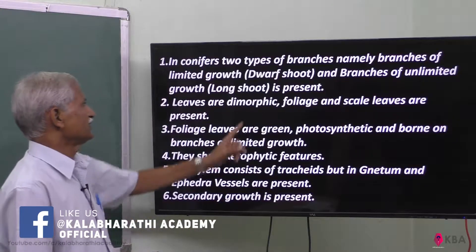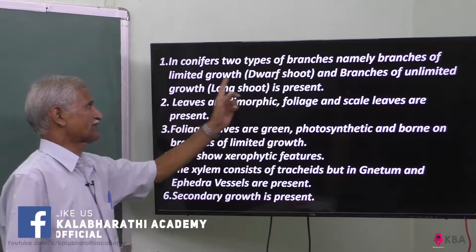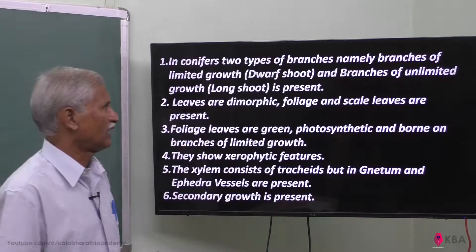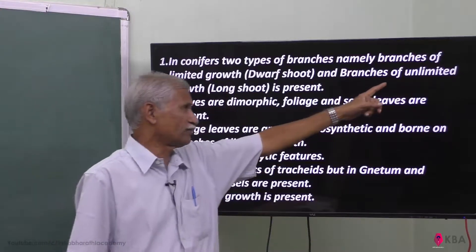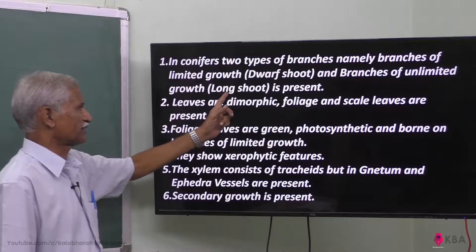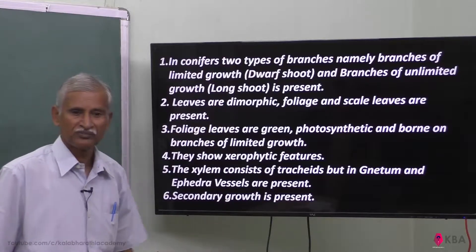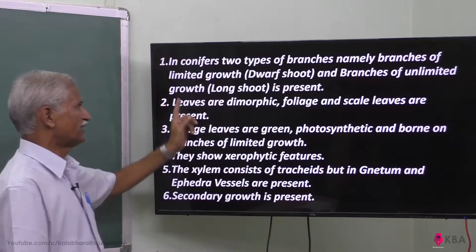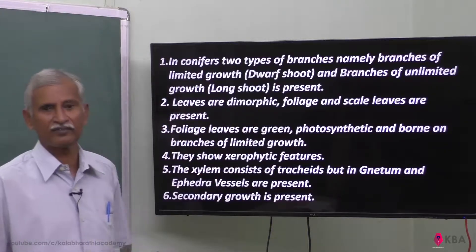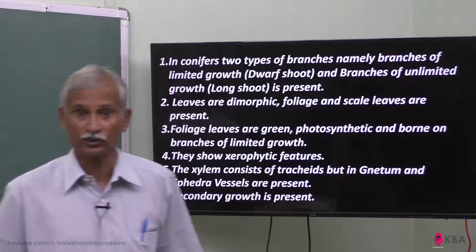In the dwarf shoot, it has limited growth. When it gets unlimited growth, it becomes a long shoot. Even the leaves are dimorphic, giving them distinct structures in the leaf.